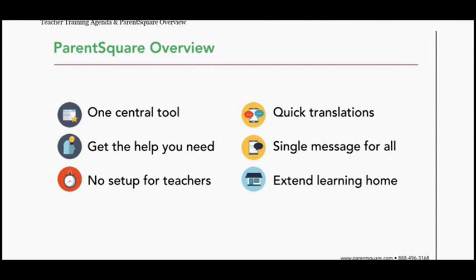All users can set their notification preferences — they can choose to get a text only, an email only, or both, along with app notifications. When you post a message, it goes out to parents in the method they prefer, and you don't have to keep track of cell phone numbers and emails. Lastly, ParentSquare extends learning to the home: when you post a message about what you're studying, parents can follow up and ask about that with their child.